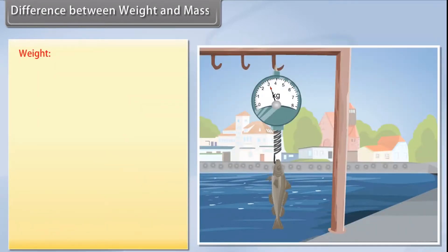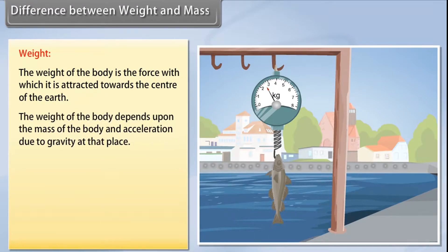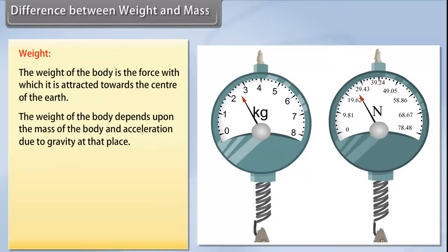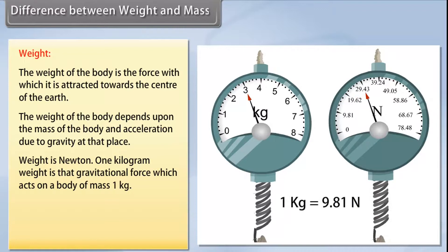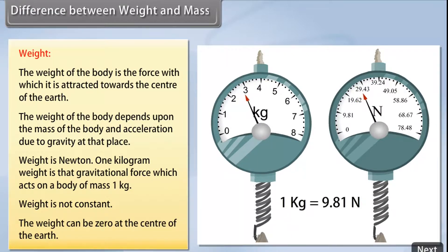Weight: The weight of the body is the force with which it is attracted towards the center of the earth. The weight of the body depends upon the mass of the body and acceleration due to gravity at that place. Weight is Newton. One kilogram weight is that gravitational force which acts on a body of mass one kilogram. Weight is not constant. The weight can be zero at the center of the earth.